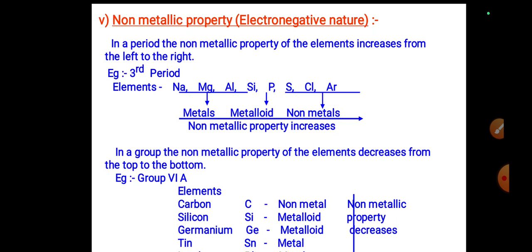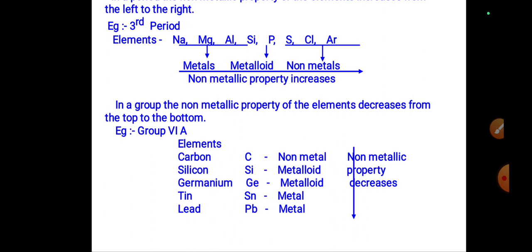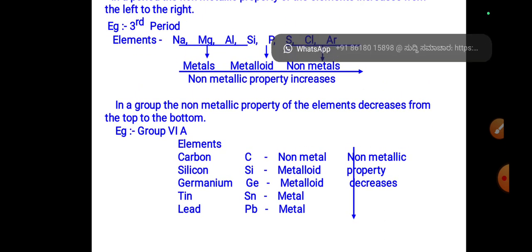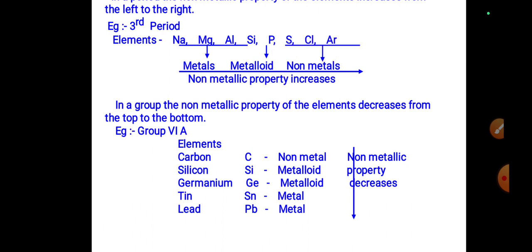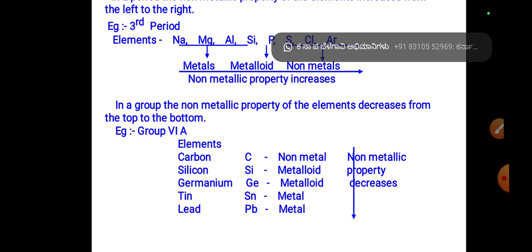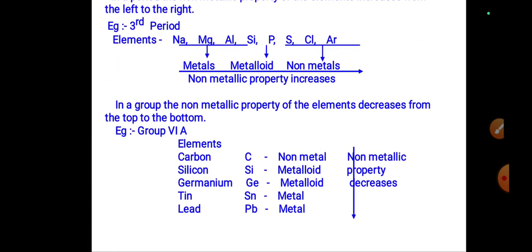In a group, the non-metallic property of elements decreases from top to bottom. For example, in the carbon group — carbon, silicon, germanium, tin, and lead — silicon and germanium are metalloids, while others include metals and non-metals. Going downward through the group, non-metallic property decreases.